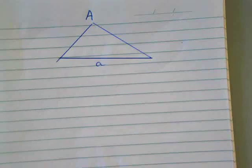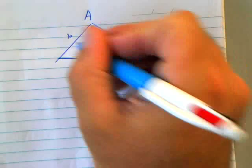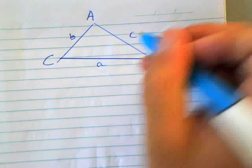If I call this corner capital B, then the opposite is called small b. If I decide to call this corner capital C, then that becomes small c. It doesn't have to be A, B, C.